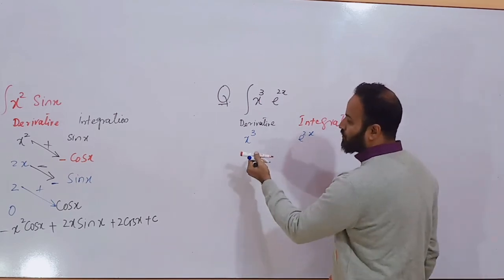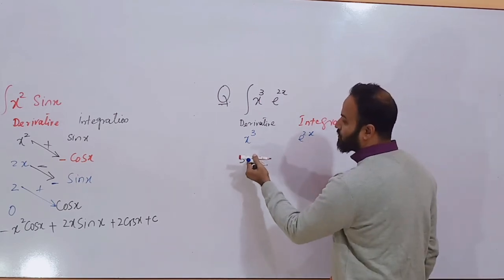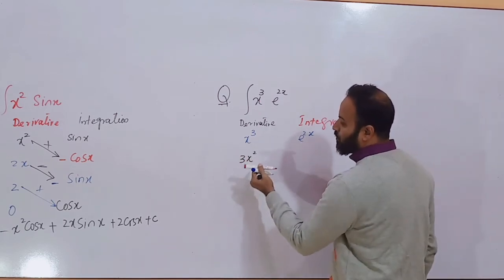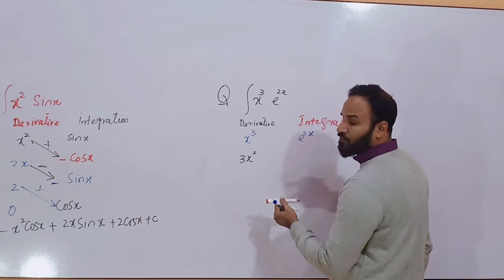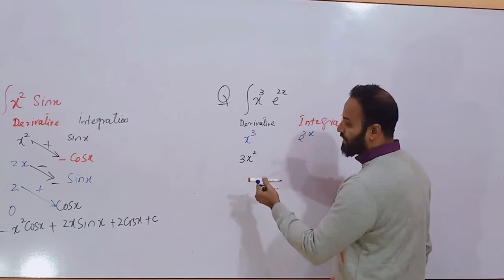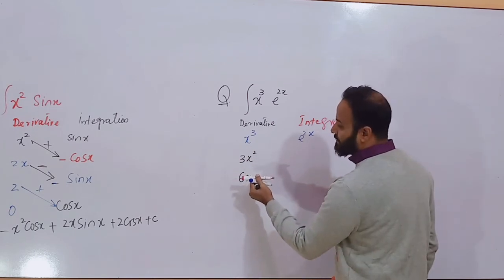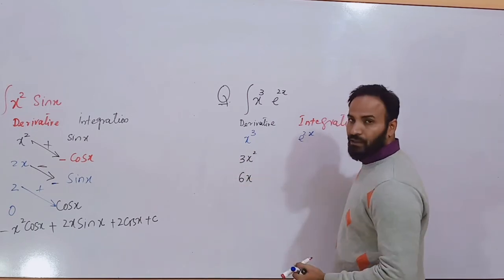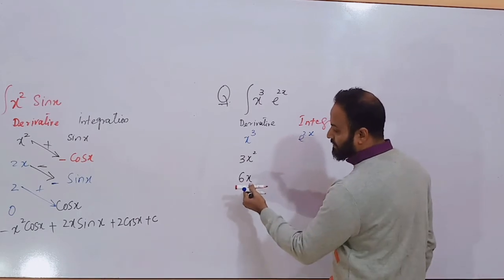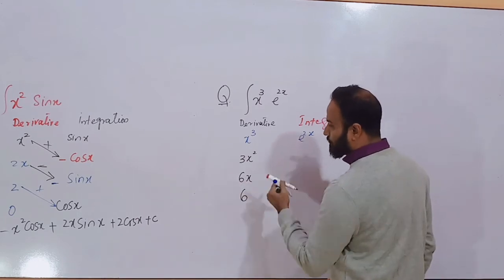What is the derivative of x³? That is 3x². What is the derivative of 3x²? That is 6x. And what is the derivative of 6x? That is 6.